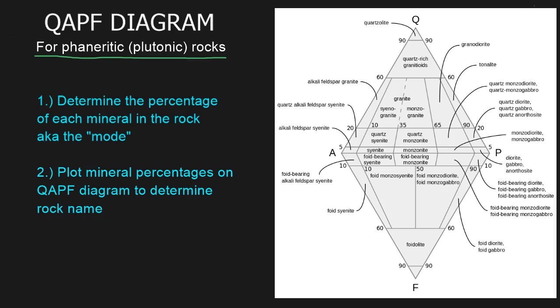If you notice this diagram, it has four points in a diamond shape, kind of like a double ternary diagram. Each of these points represents a mineral. At the top we have Q for quartz. On the left we have A for alkali feldspar. On the right we have P for plagioclase feldspar. At the bottom we have F which represents feldspathoids or foids.